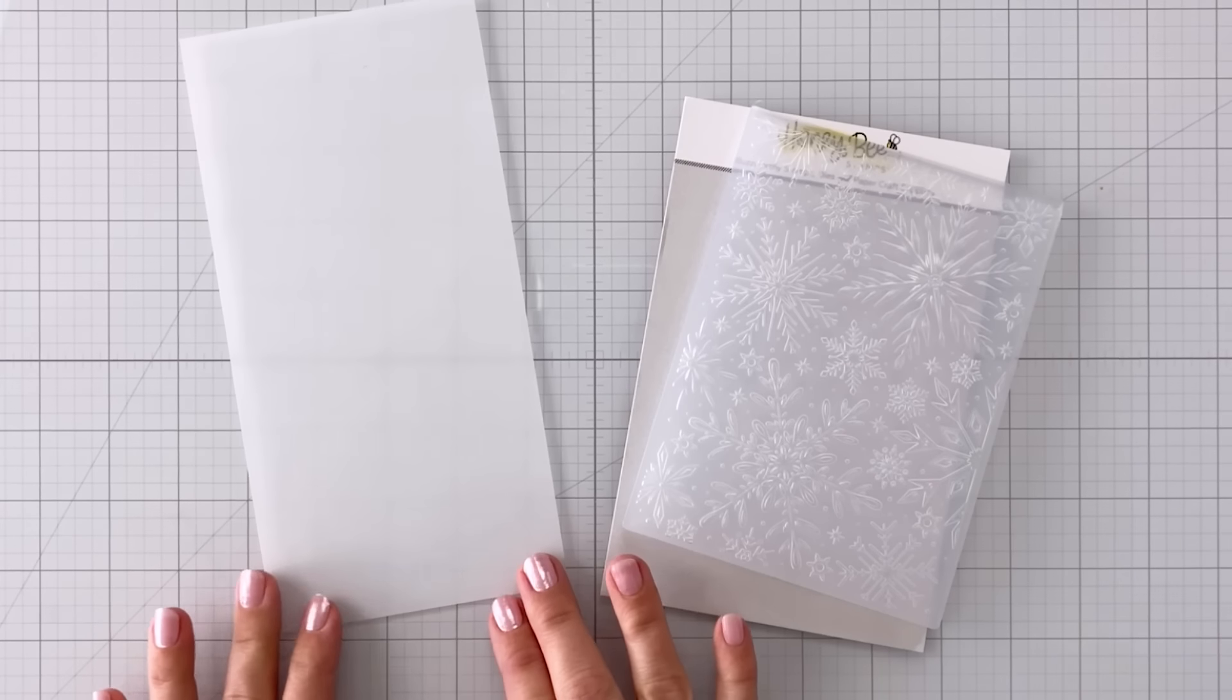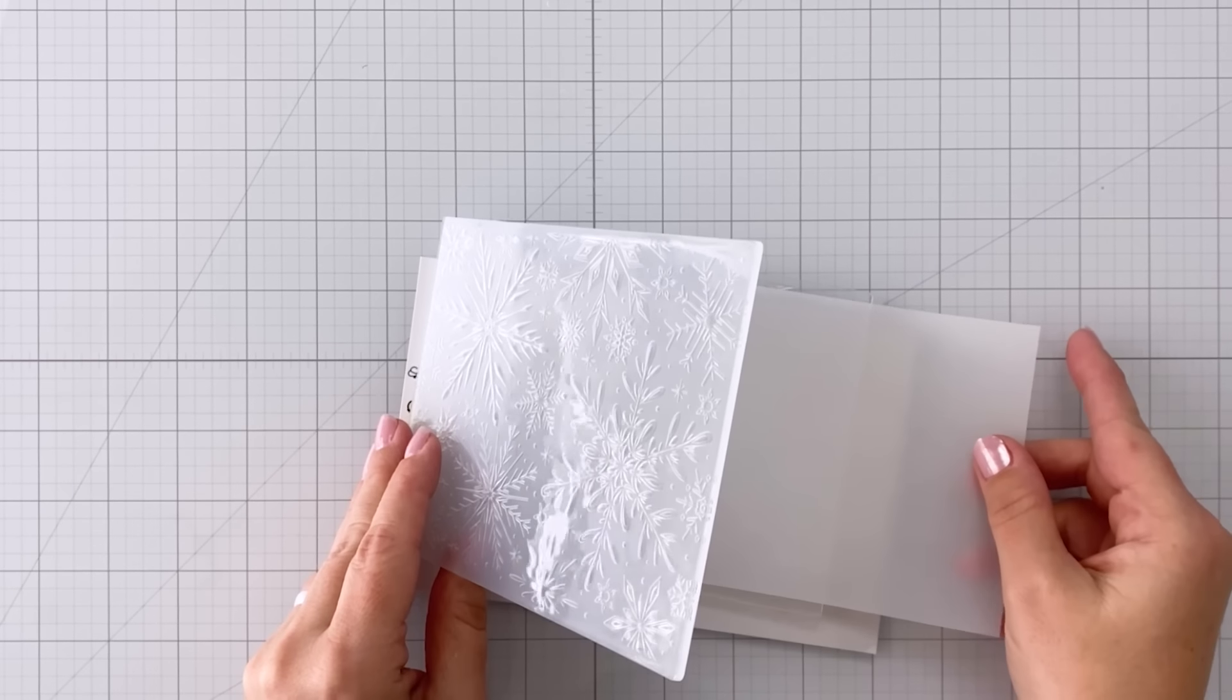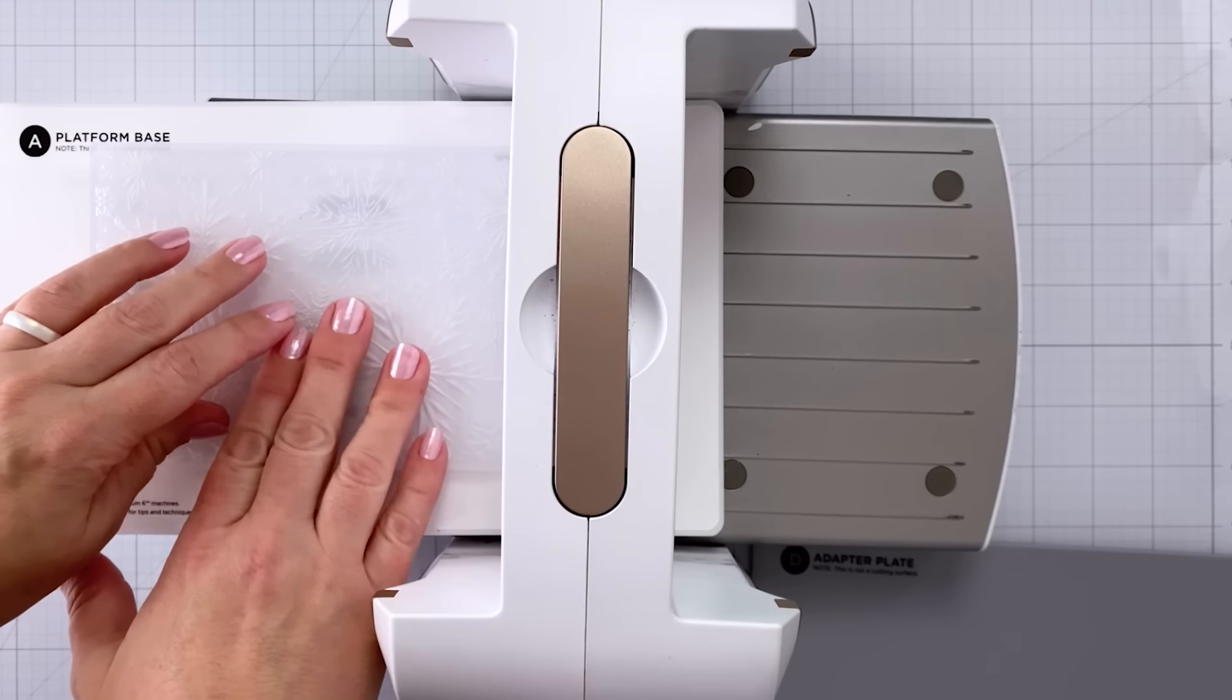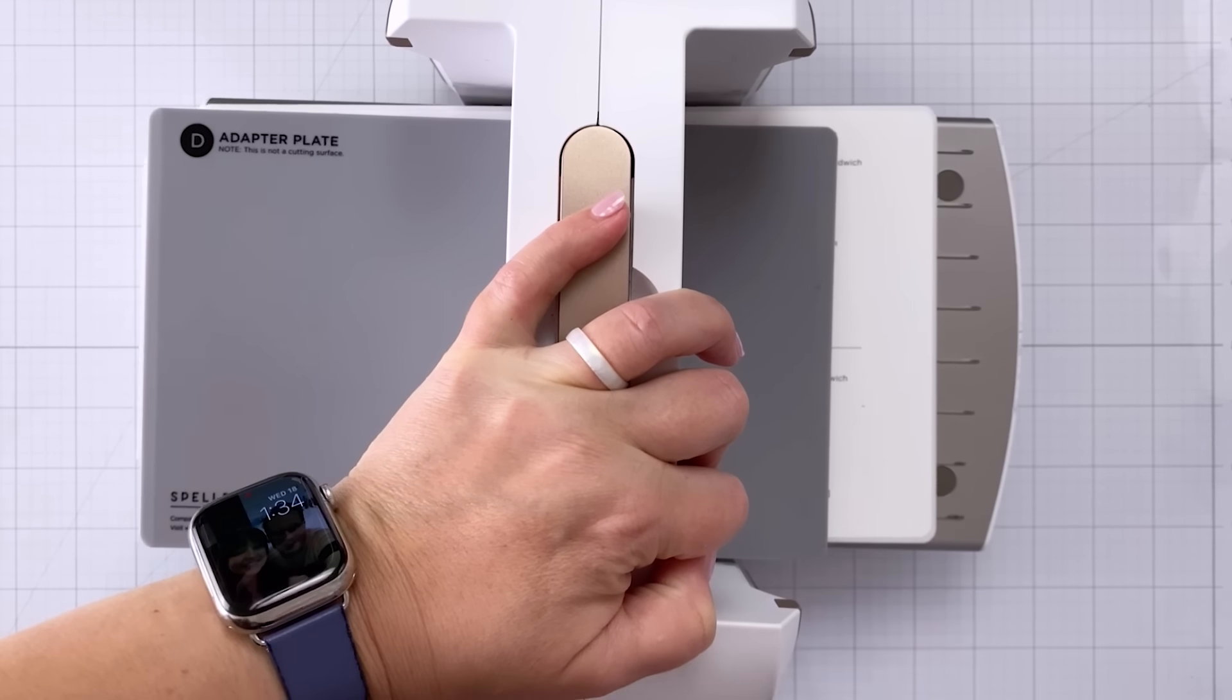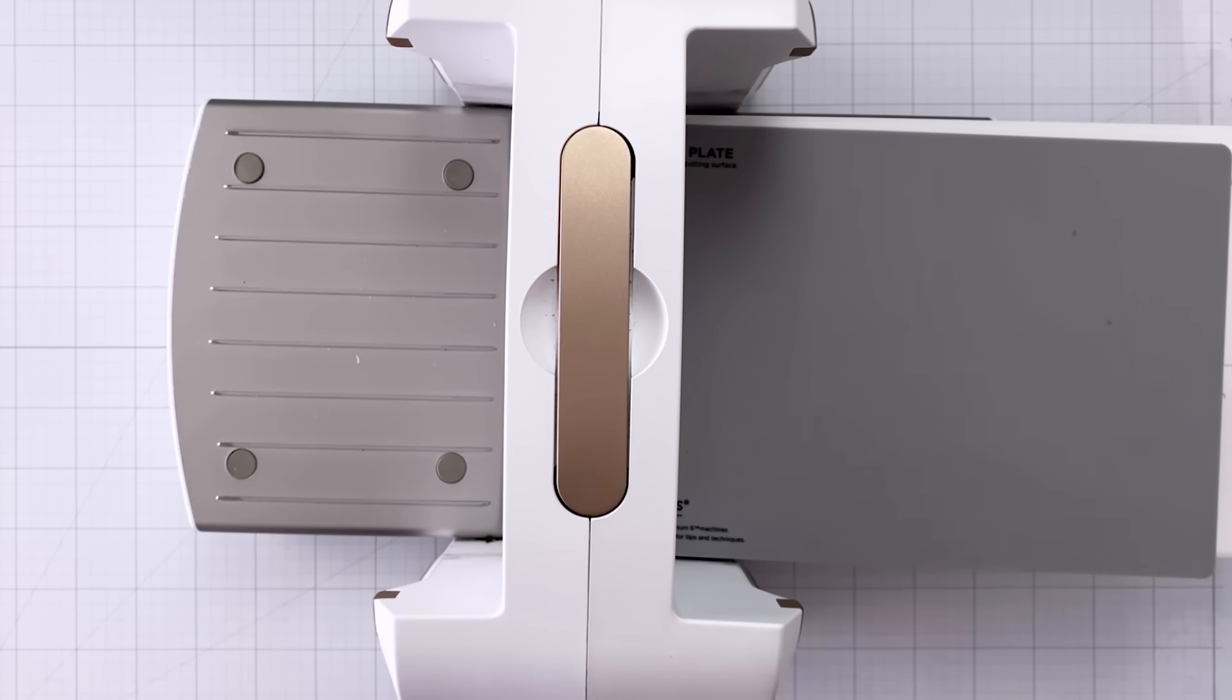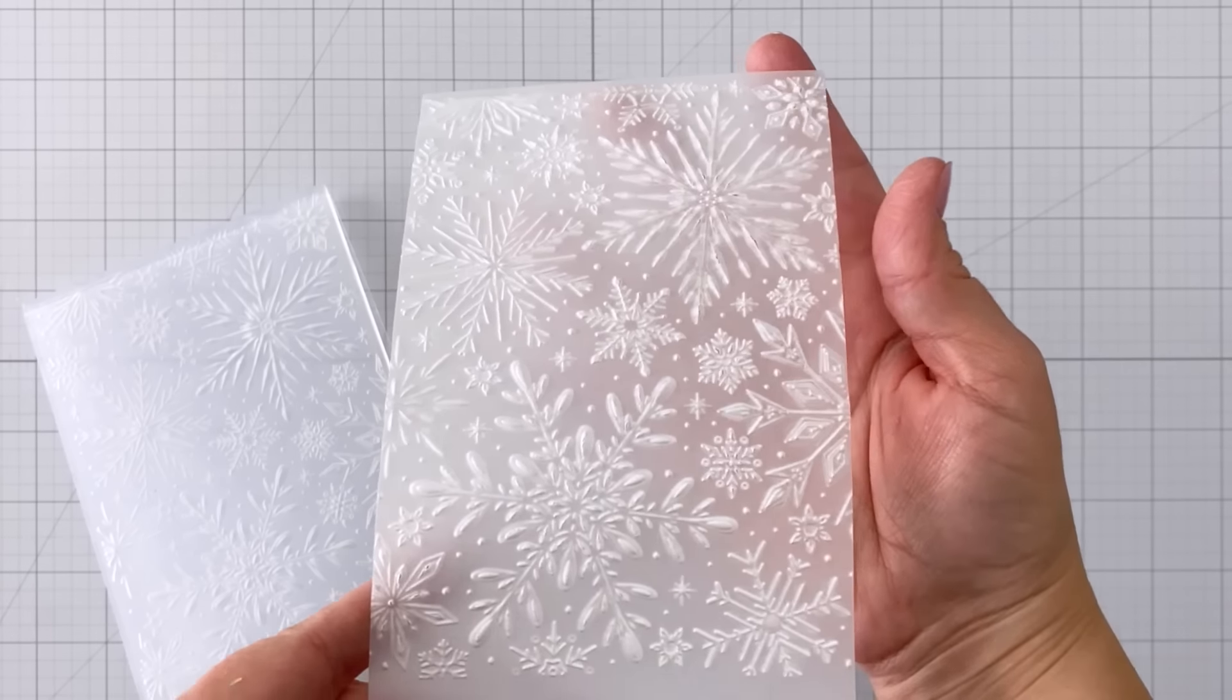For our second card we're going to be working with vellum. So again I have a sheet that's cut to four and a quarter inches by eight and a half inches and I'm going to put it in that same snowflakes 3D embossing folder. Something to keep in mind is that vellum does tend to crack when you are running it through an embossing folder so you might want to try playing with different weights of vellum as well as different sandwiches in your particular die cutting machine so that you can reduce any of that cracking. But when it comes out it does look really beautiful.